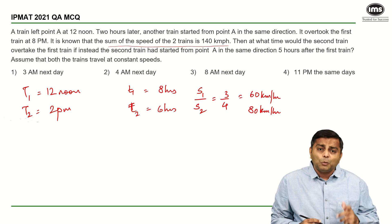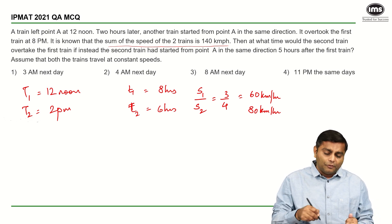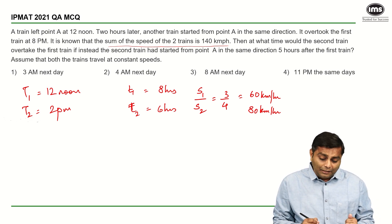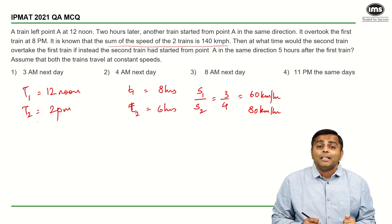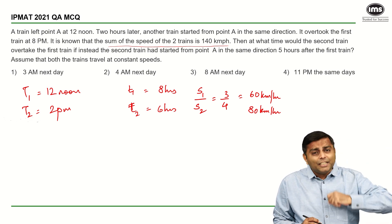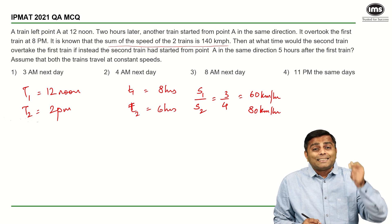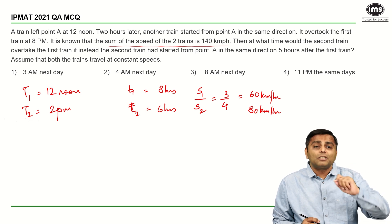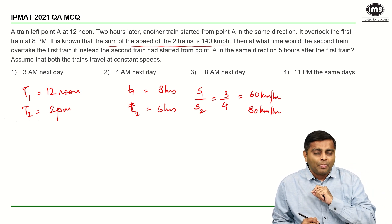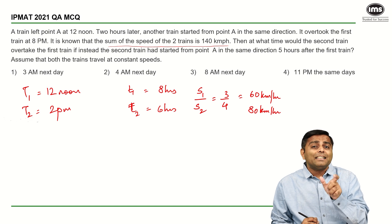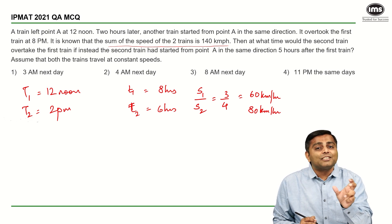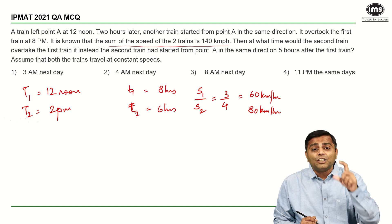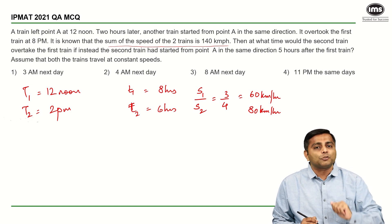Now, what they have asked is at what time would the second train overtake the first train if instead the second train had started from point A in the same direction, 5 hours after the first train, which means the first train is still starting at 12 o'clock. The second train now does not start at 2 but starts at 5.